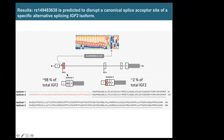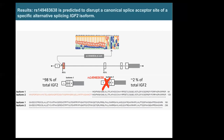IGF2 has been primarily studied through isoform 1, as it is expressed at higher frequency. However, there is a minor isoform expressed at very low levels — around 2% depending on the tissue — that has an additional 56 amino acids, producing a longer protein sequence shown in red. Individuals in Mexico carrying this variant can express isoform 1 but cannot express isoform 2. This was a robust prediction based on splice site analysis, but we needed to test it experimentally.